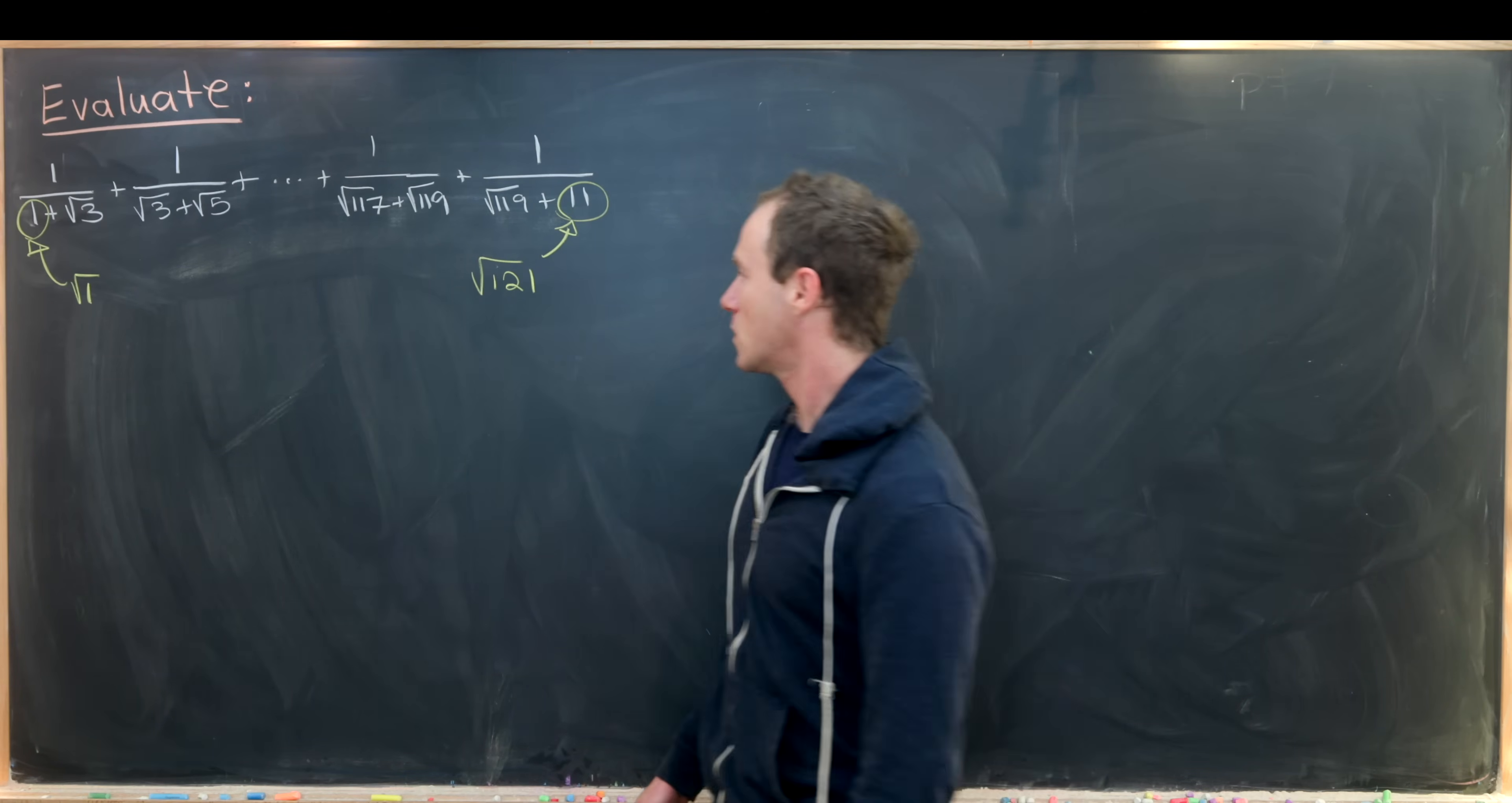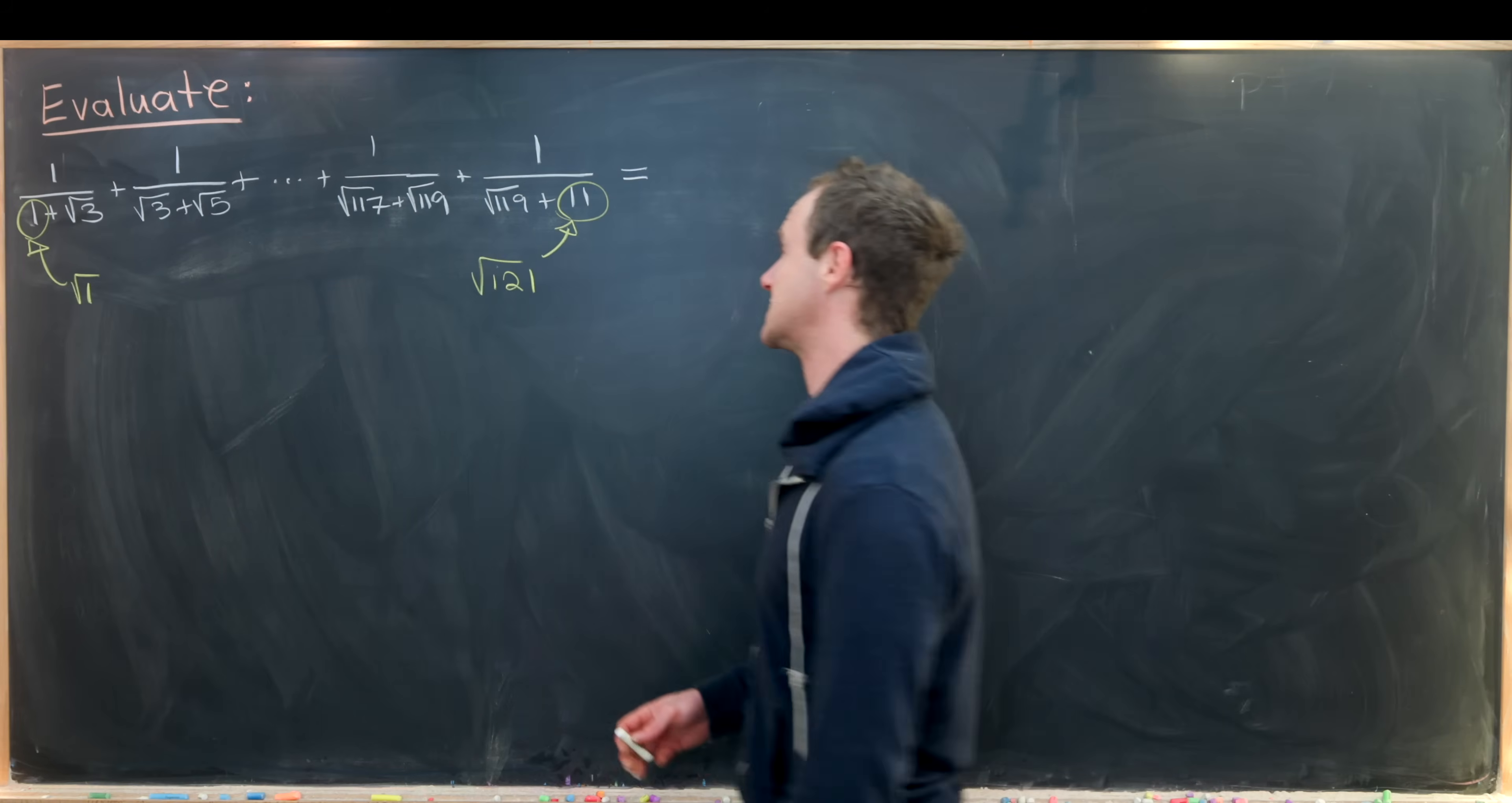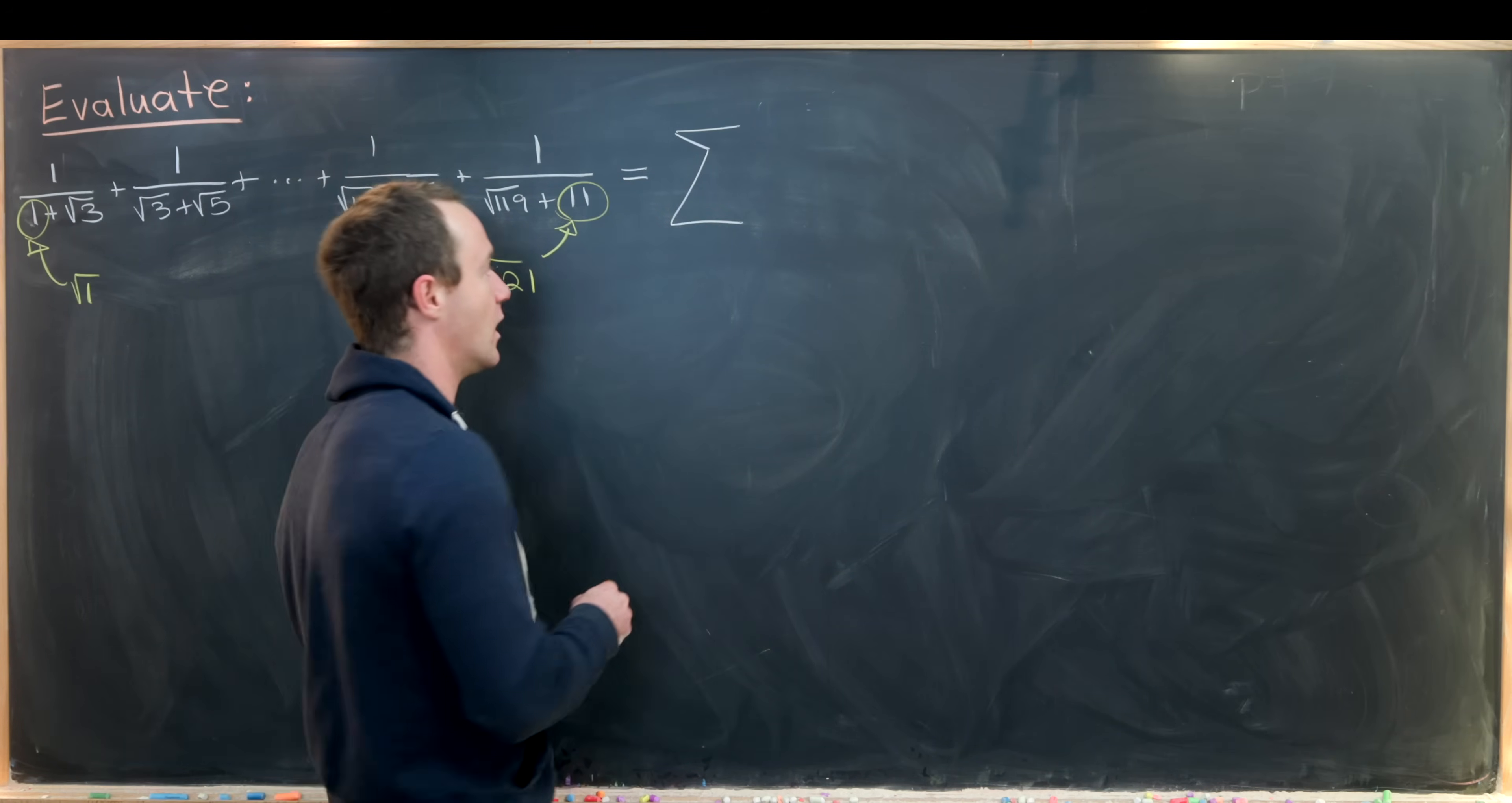To get started, I'm going to rewrite this using summation notation. That'll allow the simplification to happen all at once. Our first term is 1, which we can write as 2n - 1 where n equals 1.